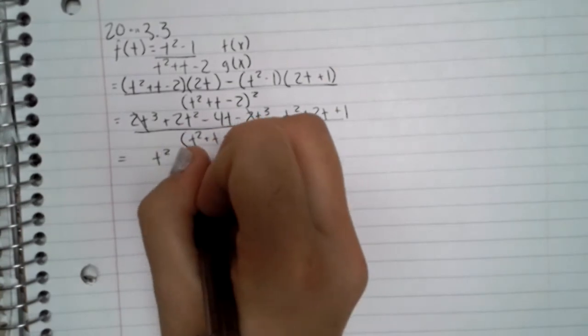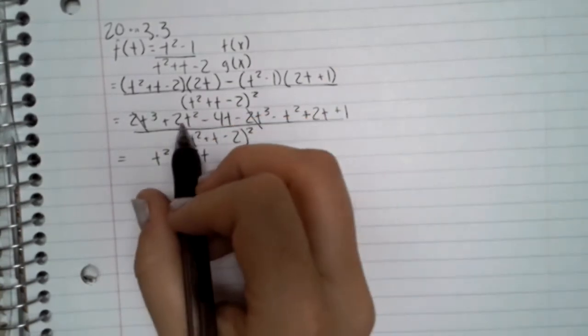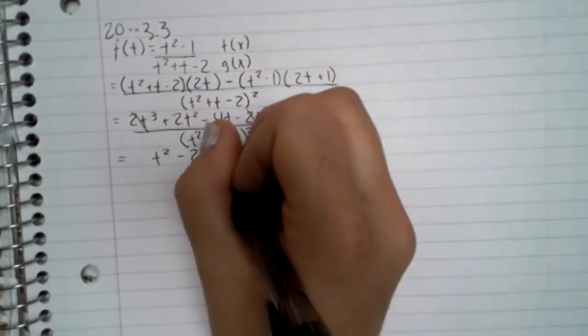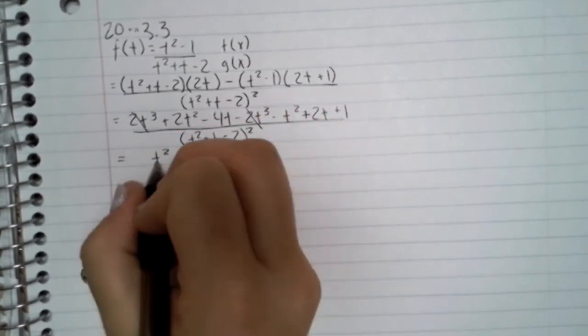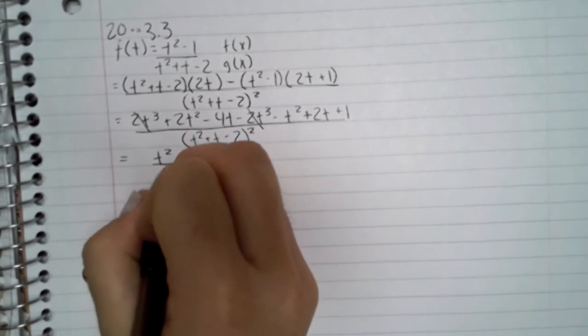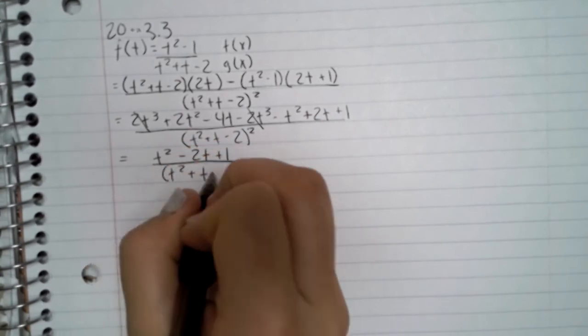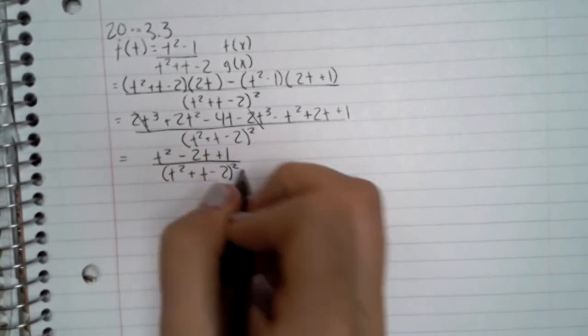And then you have t squared minus 2t plus 1, all over t squared plus t minus 2 squared.